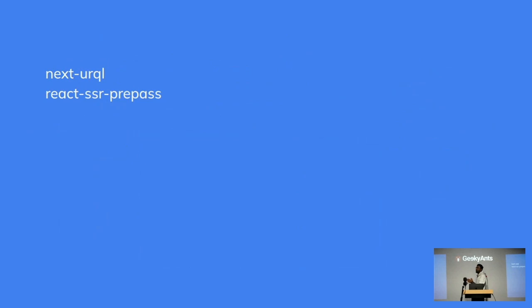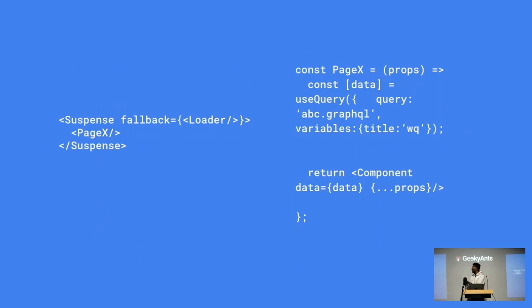If you're using URQL, there are two key packages: next-urql and React SSR Prepass. The reason we chose URQL — why we thought of migrating from Apollo to URQL — was that Suspense for data fetching on both client and server is only supported in URQL as of now. Apollo has recently started an RFC which is still a work in progress, but URQL is the only one which supports Suspense even on the server side. Let's dive into some internals.